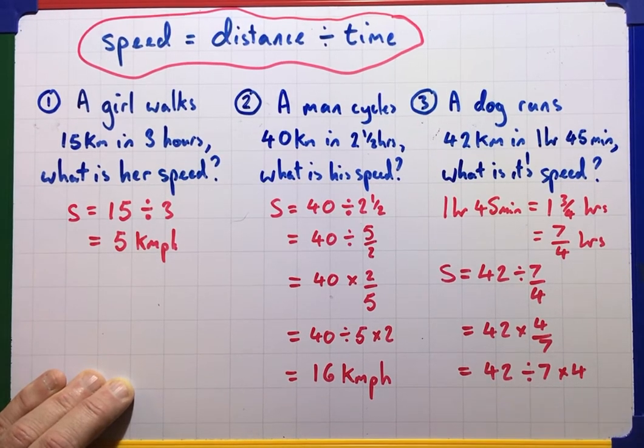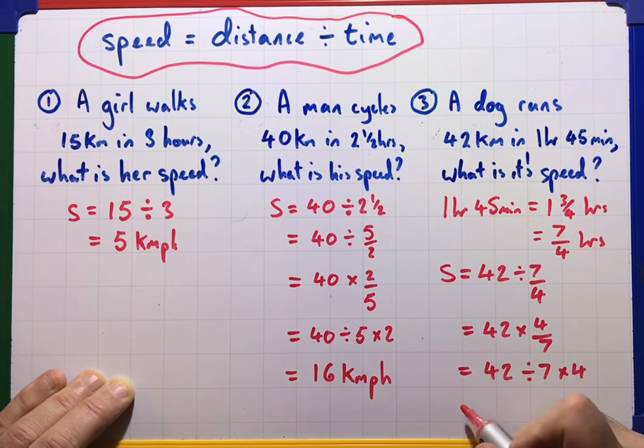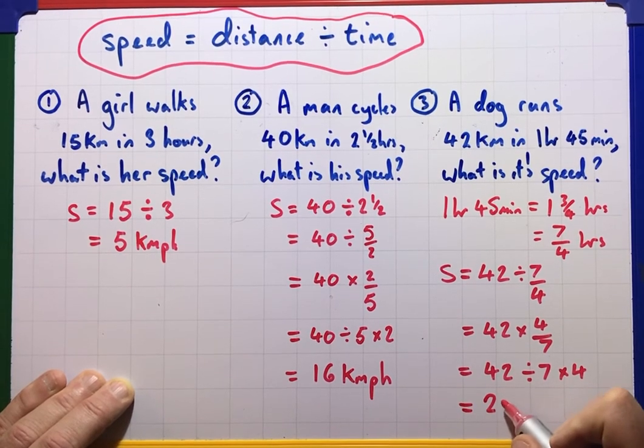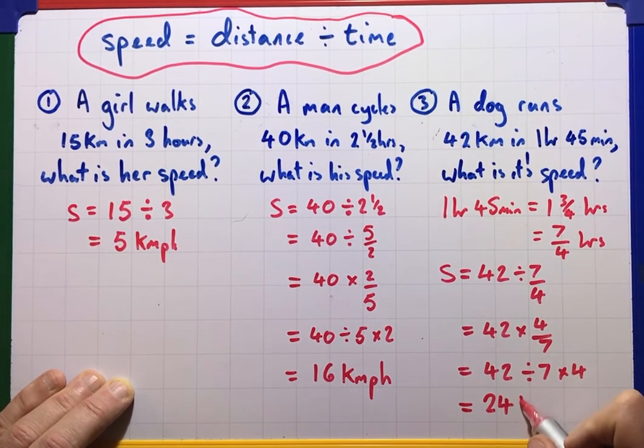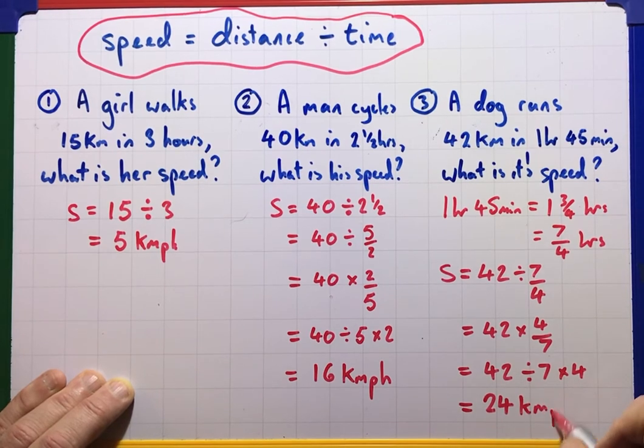Well, 42 divided by 7 is 6, times 4 is 24. So we've got 24 kilometres per hour.